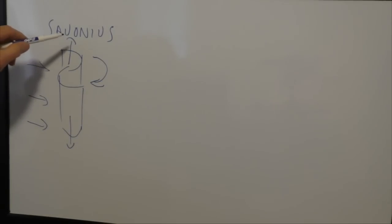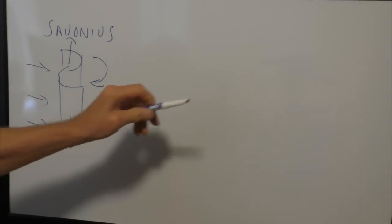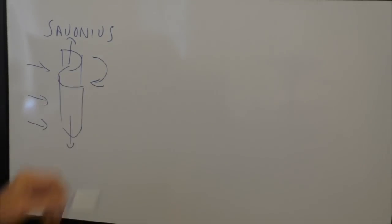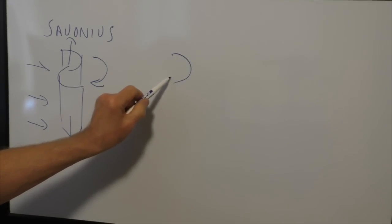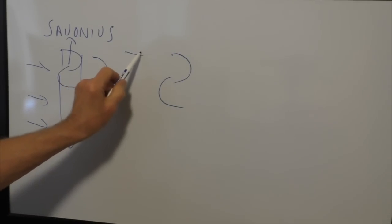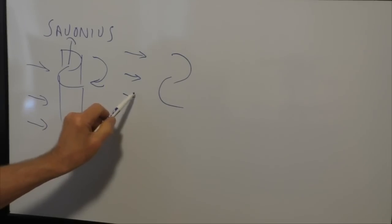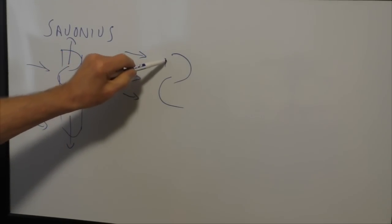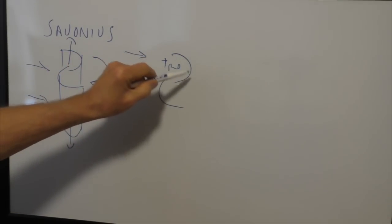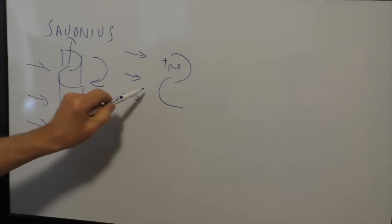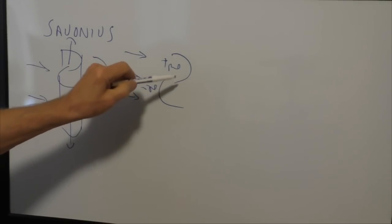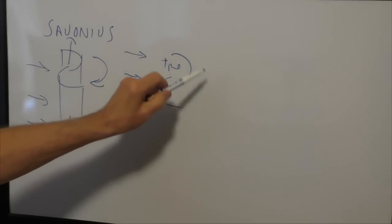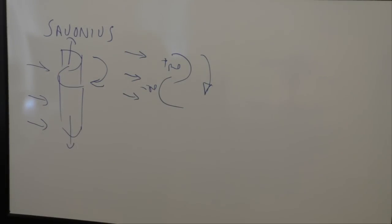Take the conventional Savonius machine and turn it into a horizontally mounted machine so that we can look at it like this, wind from this direction. Here we'll get a positive drag on this bucket right here and a negative drag on this bucket here. With the wind captured more right here, the turbine will rotate in that direction.